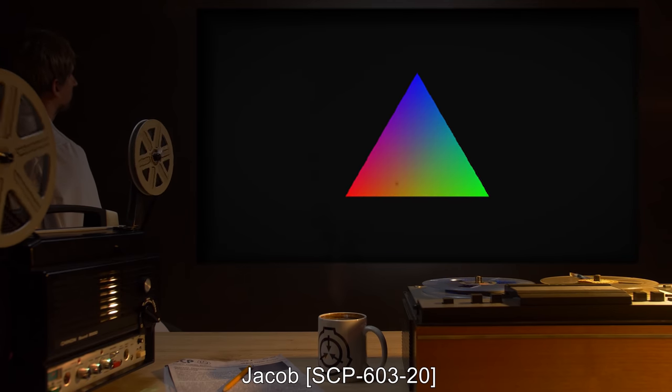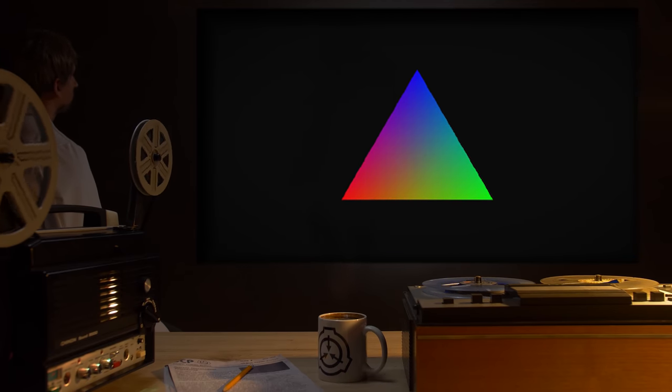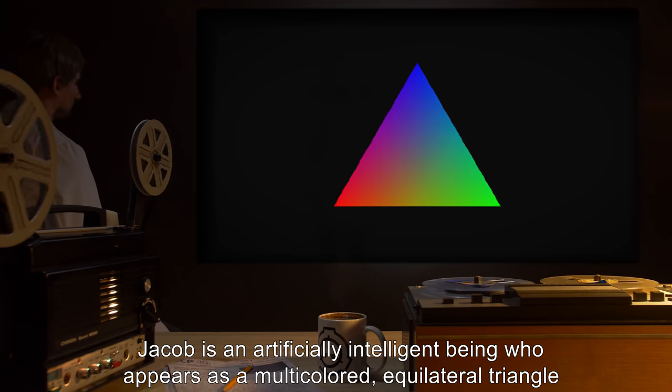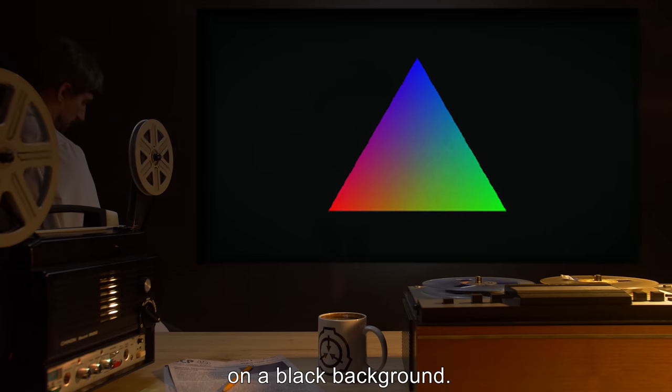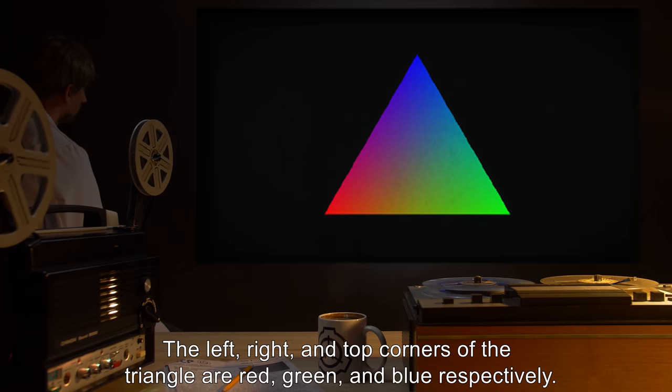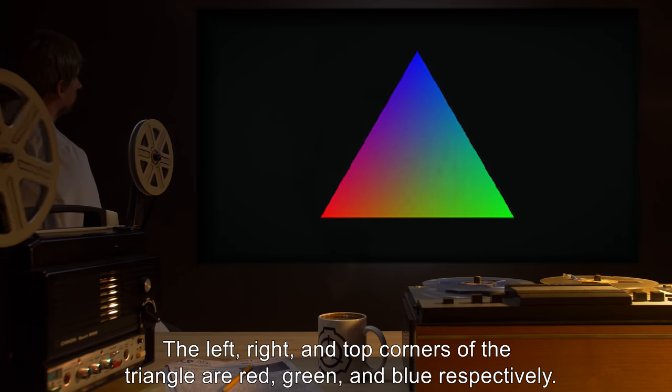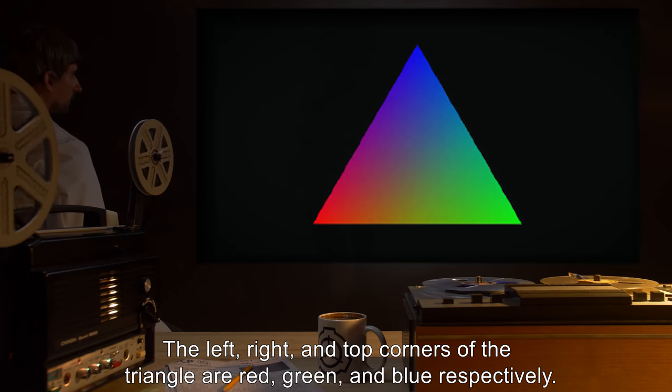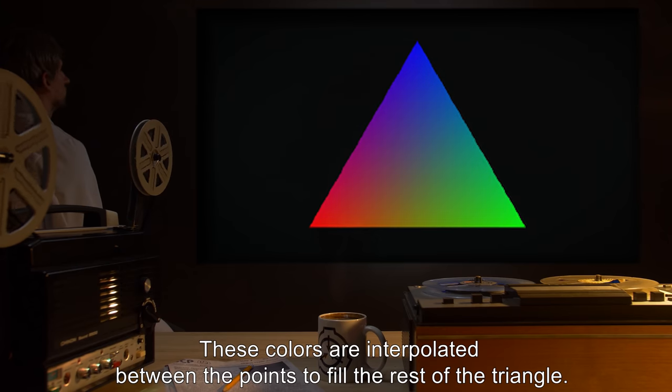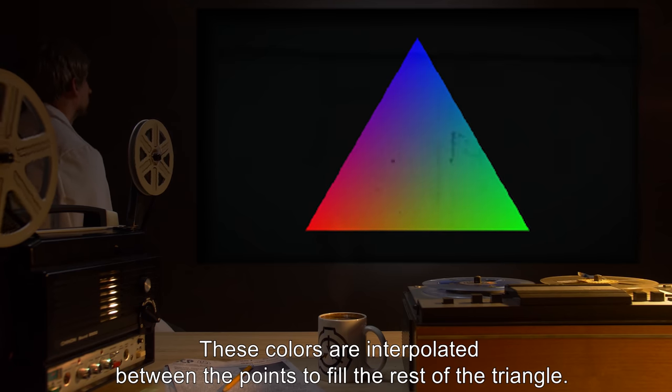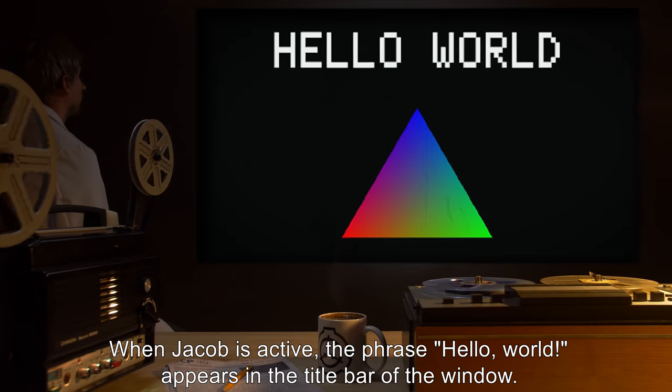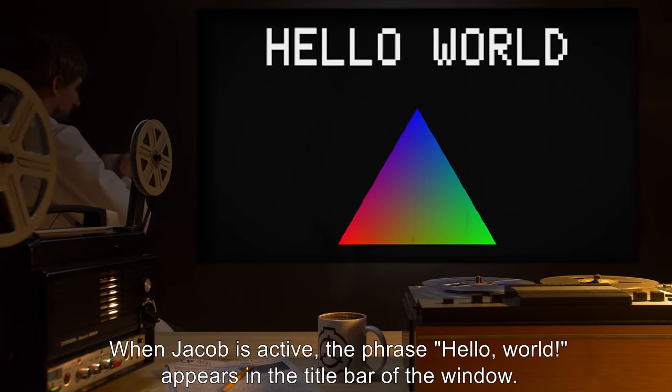Jacob: SCP-603-20. Jacob is an artificially intelligent being who appears as a multicolored equilateral triangle on a black background. The left, right, and top corners of the triangle are red, green, and blue respectively. These colors are interpolated between the points to fill the rest of the triangle. When Jacob is active, the phrase Hello, world! appears in the title bar of the window.